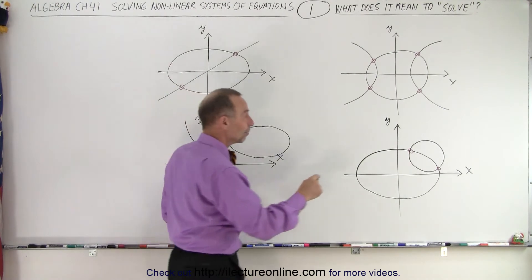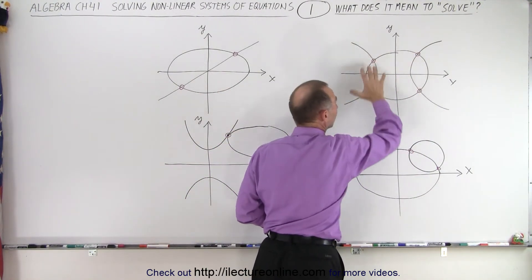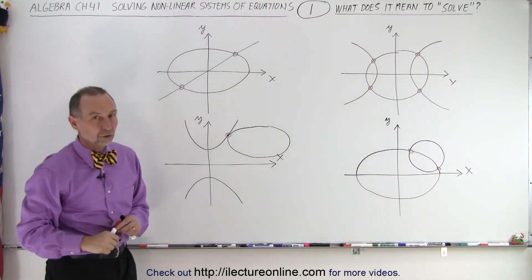In other words, we have to learn how to find the places where the two cross. So here you can see we have four solutions, two solutions, two solutions, and just one solution.